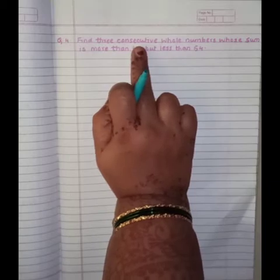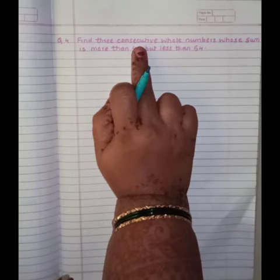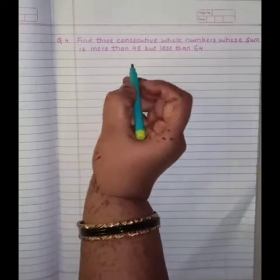But they said consecutive. Consecutive means the numbers which come 1 after 1. So see how to assume.